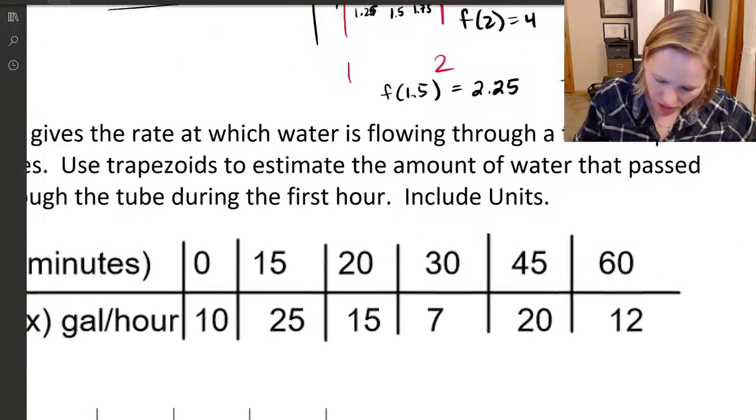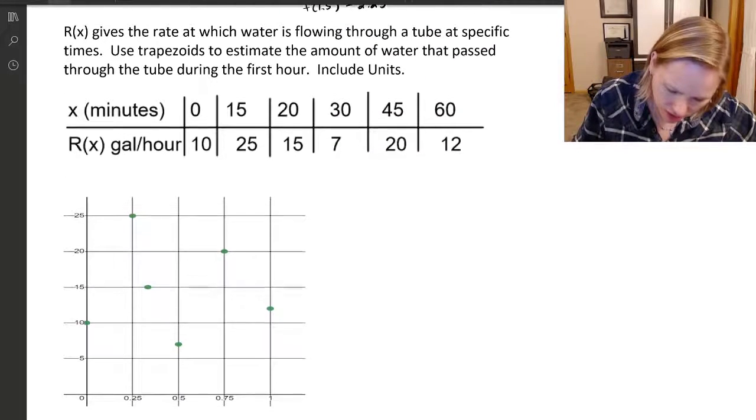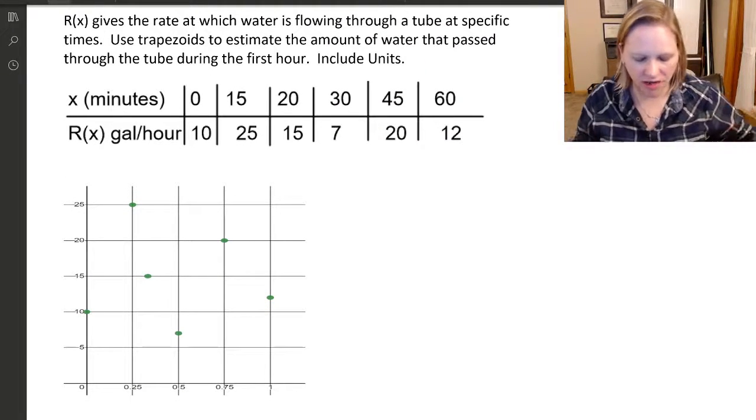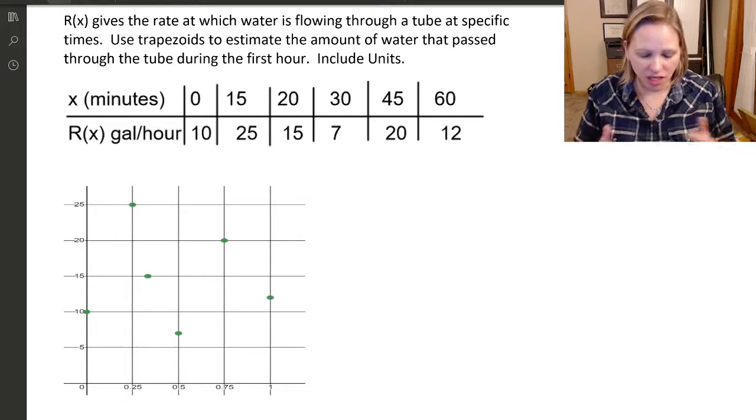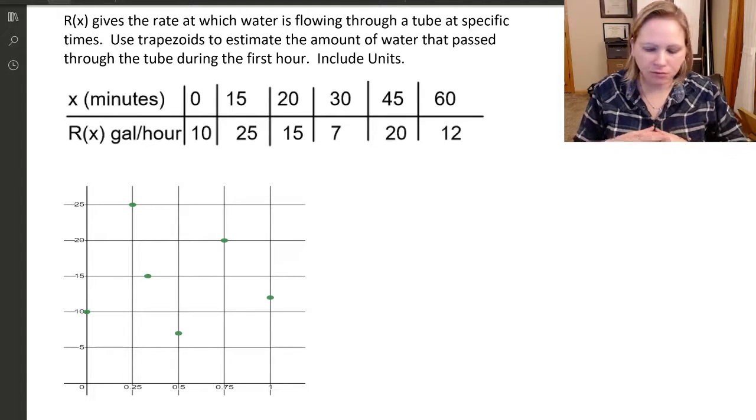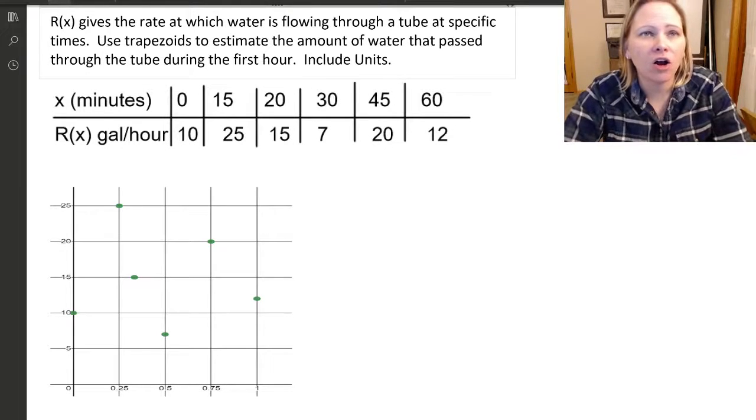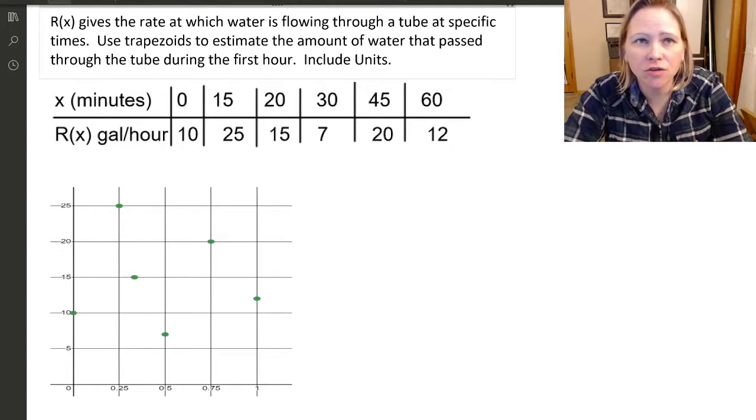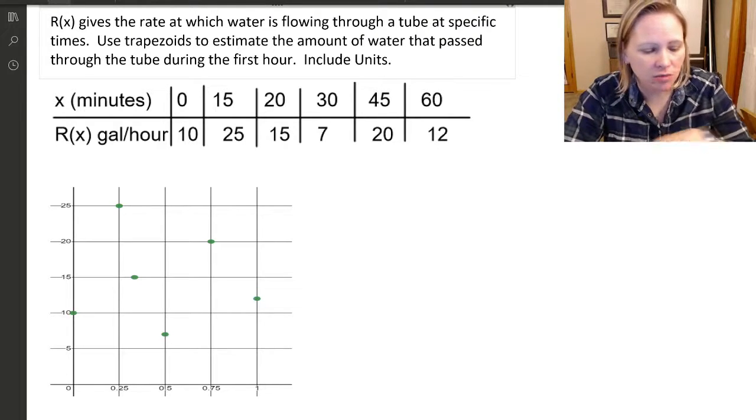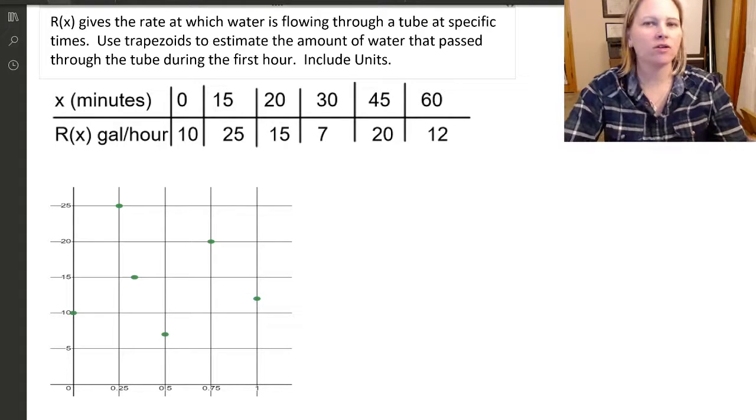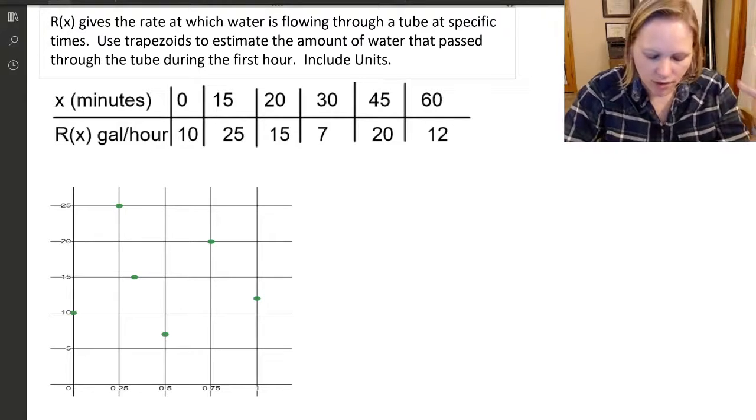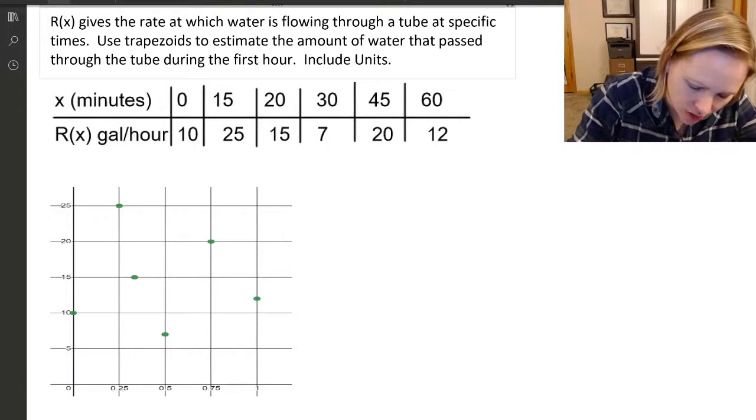Let's take a look here at some tabular data. This is a tabular problem. Most of the time when we do our trapezoid rules, we're given a table. Here we have a function r(x) giving the rate at which water is flowing through a tube at specific times. Use trapezoids to estimate the amount of water that passed through the tube during the first hour. Include units.